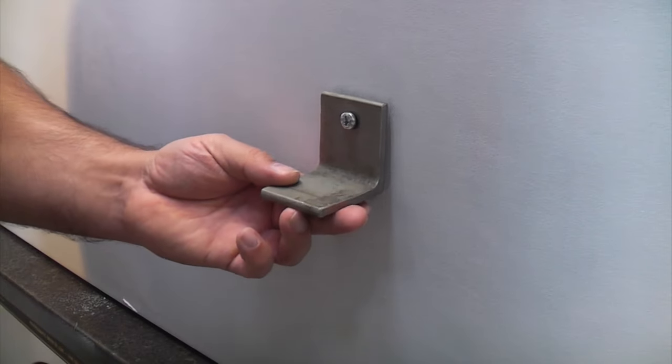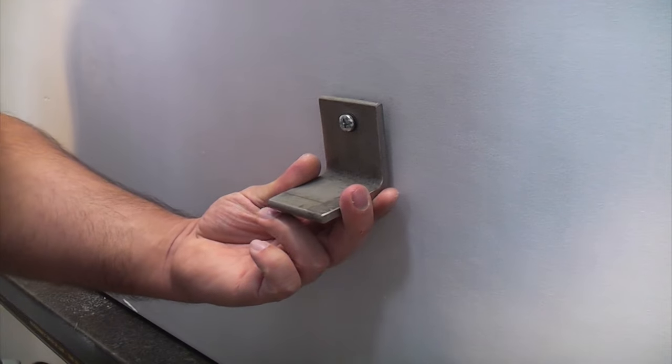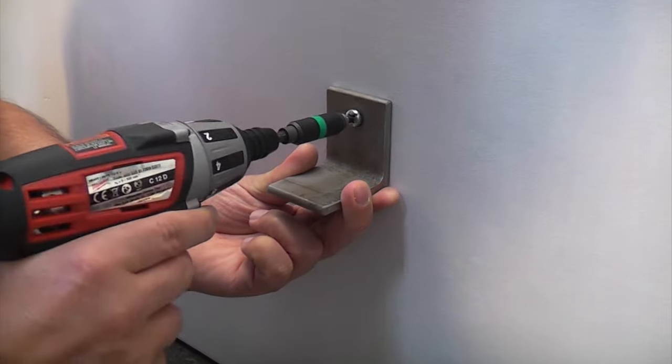Then in order to get the spring toggle to bite on the back, you sometimes have to pull the item that you're fixing forwards a bit. So I'll just do that, and as you can see it's now biting.